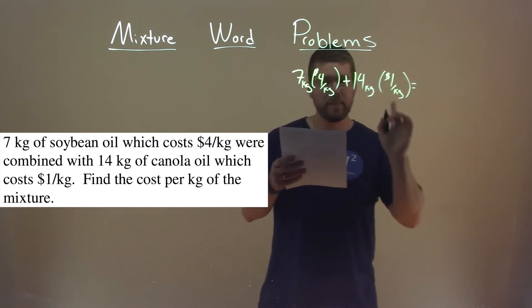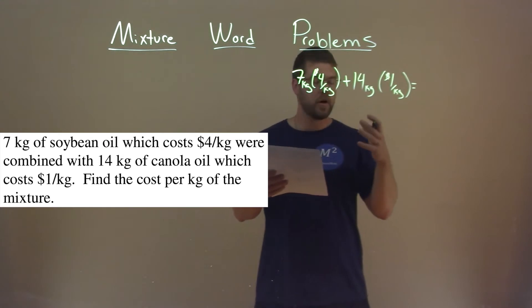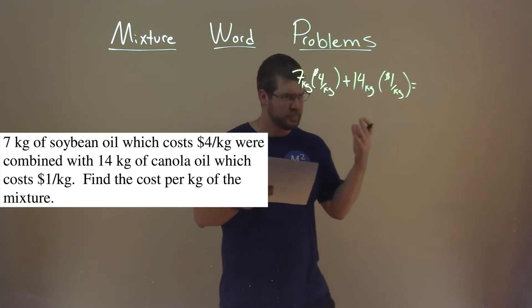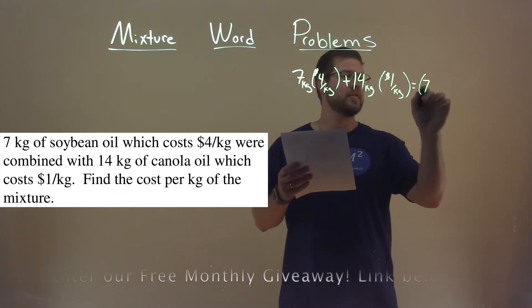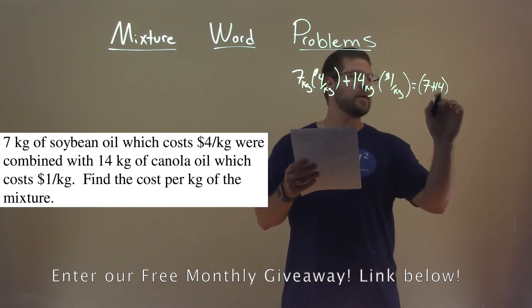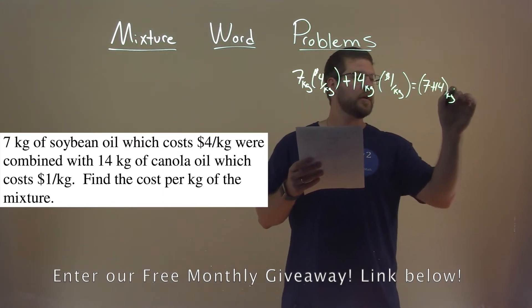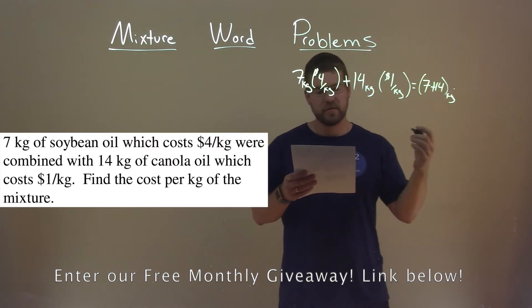That should equal the overall final mixture, its number of kilograms, which is combining the two, 7 plus 14 kilograms, times the final price which we don't know.